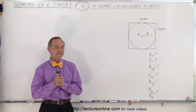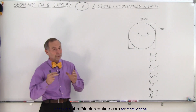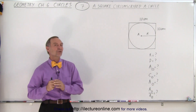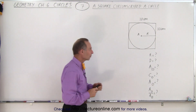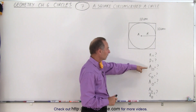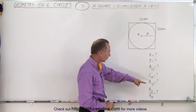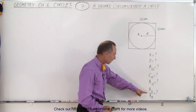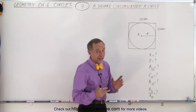Welcome to ElectronLine. In this example we're placing a circle inside the square and we're asking for the radius of the circle, the diameter of the circle, the area of the square, the circumference of the circle, the area of the circle, and the ratio of the area of the circle to the area of the square.